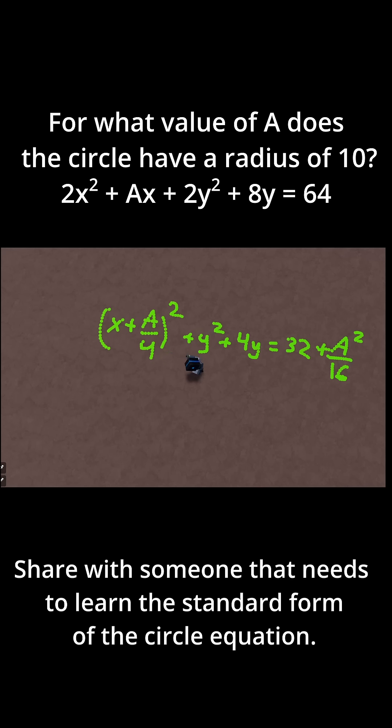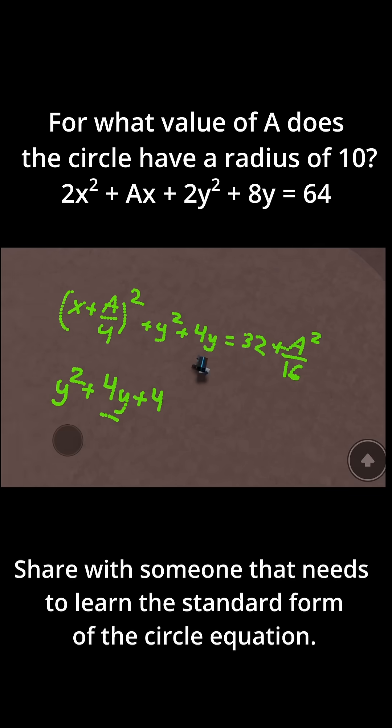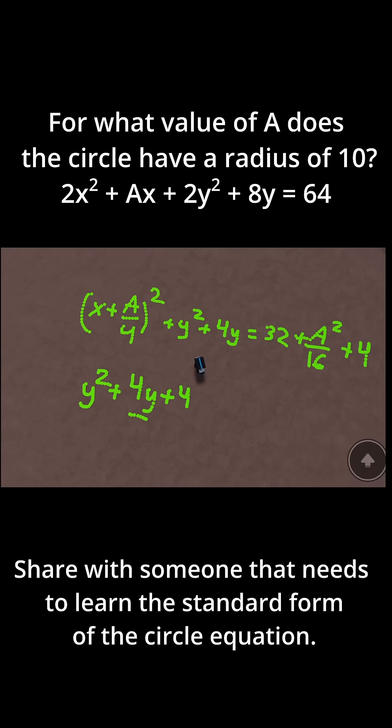Now let's work with the y terms and complete the square for those. So y² + 4y. And then to complete the square, you take the coefficient on the y, that's 4, divided by 2. So 4/2 is just 2. Then you square it. And 2² is just 4. So we just got back to the number 4 anyway. So add 4. And then we add 4 to the left side, add it to the right side to be consistent.